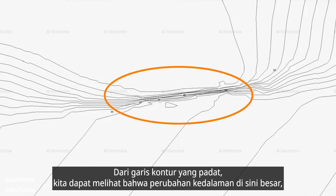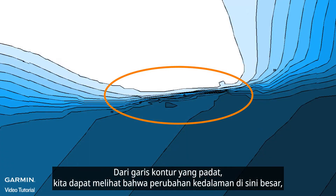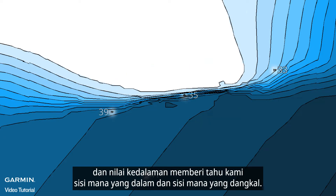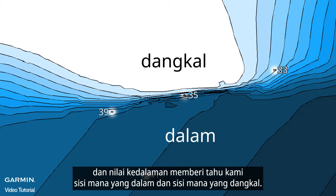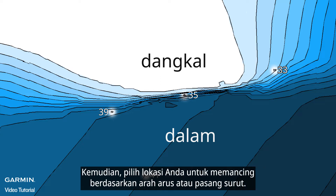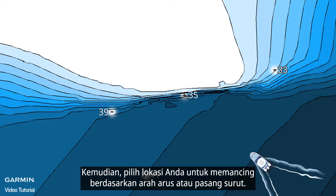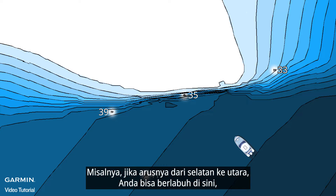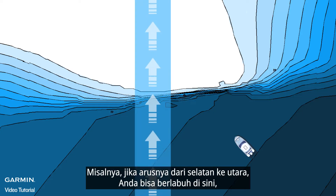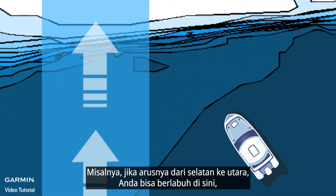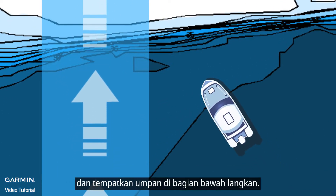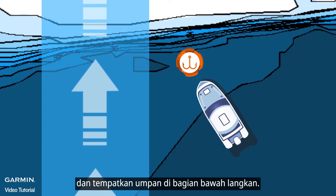From the dense contour lines, we can see that the depth change here is large, and the depth values let us know which side is deep and which side is shallow. Then choose your location to fish based on current or tide direction. For example, if the current is from south to north, you can anchor here and place the bait at the bottom of the ledge.